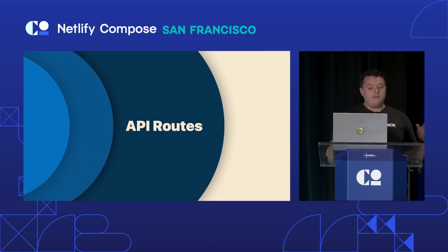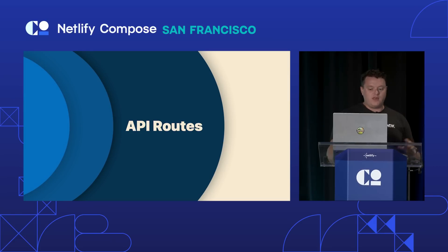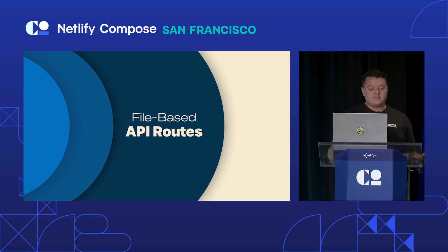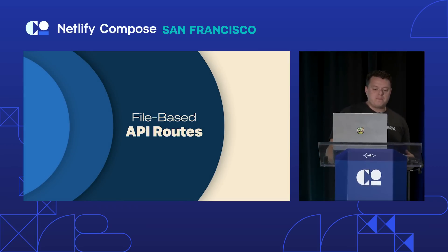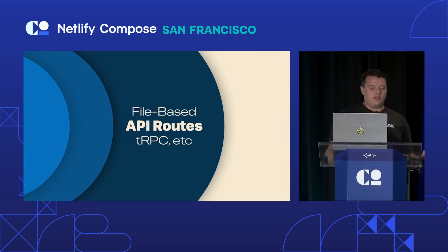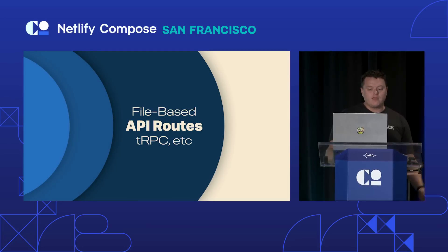Beyond that, you also get API routes. Thanks to Vinxi and Nitro, Start has support for API routes out of the box. You can do file-based routes using a file-based API route utility, or use tools like tRPC or Express, or hook it up to whatever you want. It's pretty cool and very flexible.